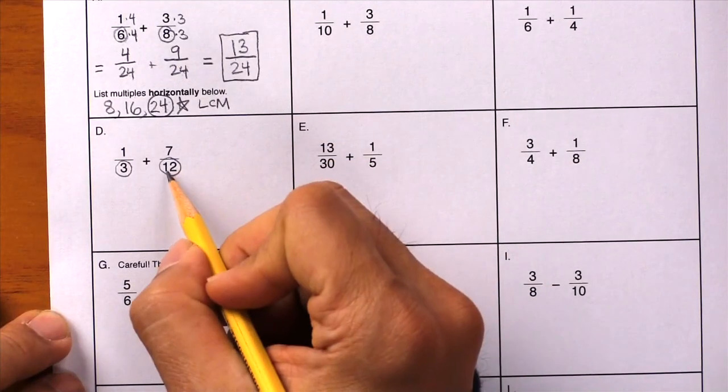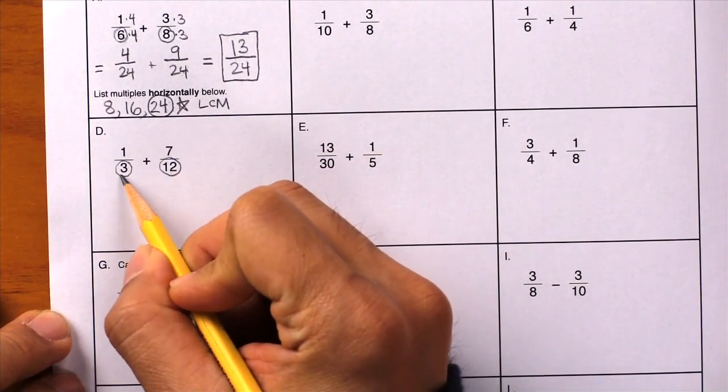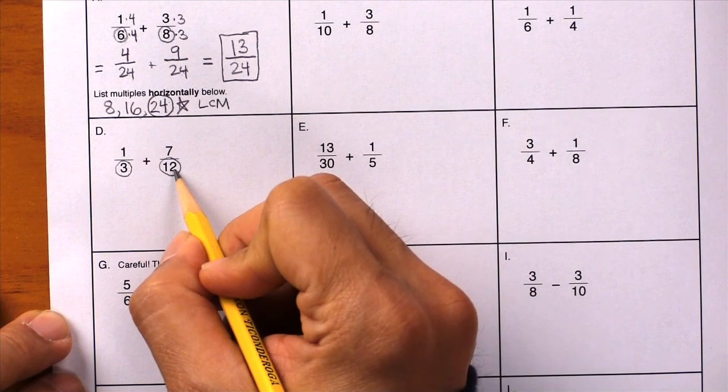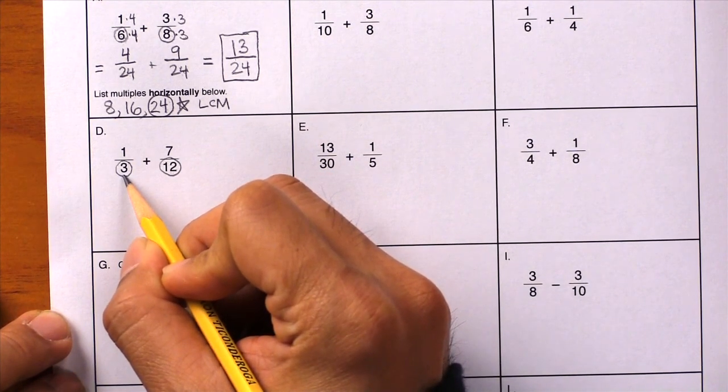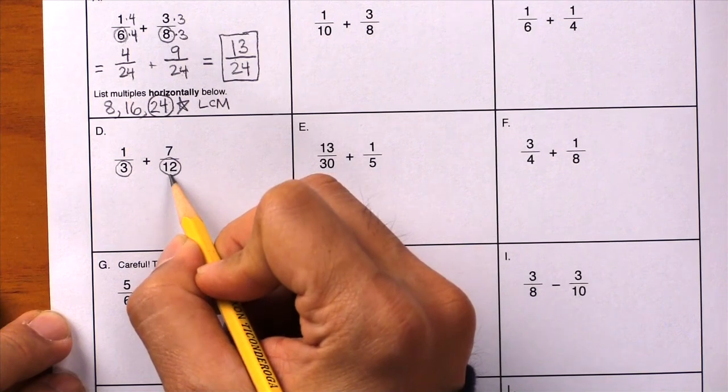Let's try the magic question first to see if that works. Larger number divided by the smaller number. Can you do twelve divided by three evenly? The answer is yes. So twelve is our LCM. Rewrite the problem.